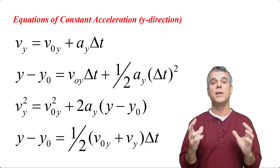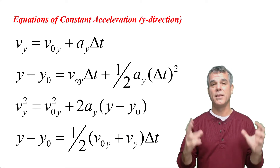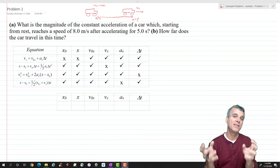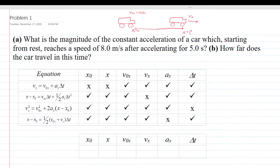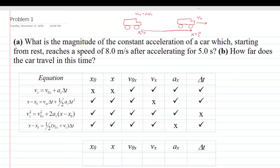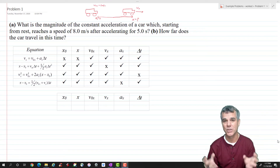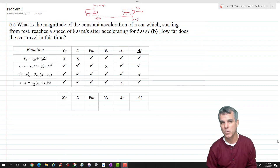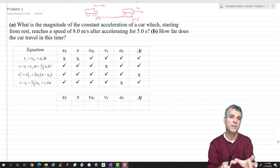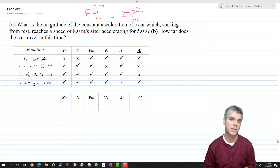Those are the equations. Let's now look at an example problem. I'll go through step by step how to do it, and then I'll summarize the problem-solving strategy. Part a: What is the magnitude of the constant acceleration of a car which, starting from rest, reaches a speed of 8 meters per second after accelerating for five seconds? Part b: How far does the car travel in this time? The first step to any physics problem is read the problem and visualize what's going on — don't just start plugging numbers into an equation.